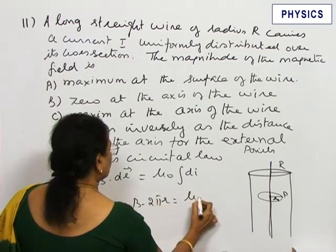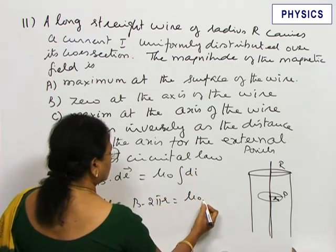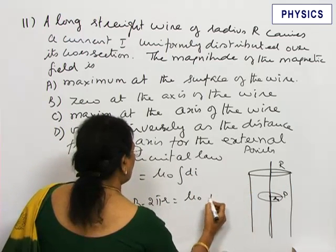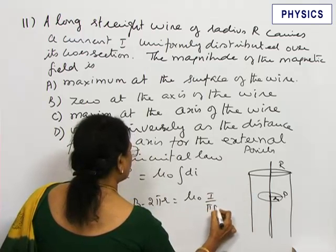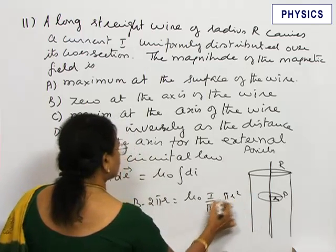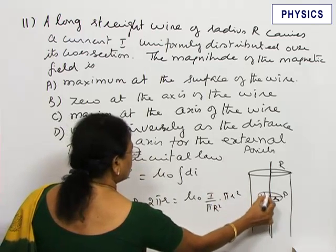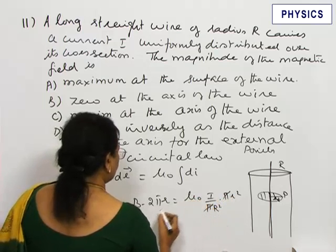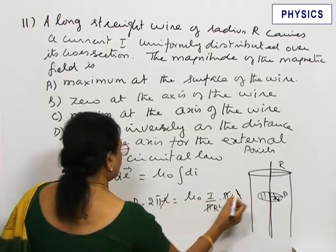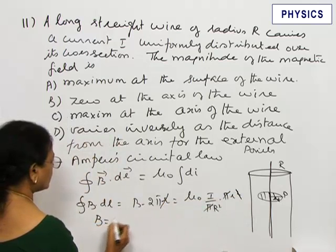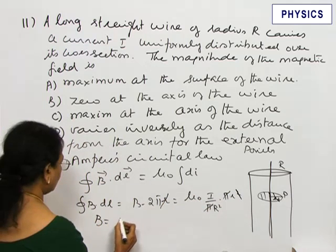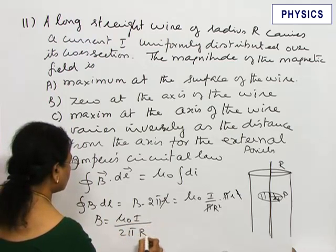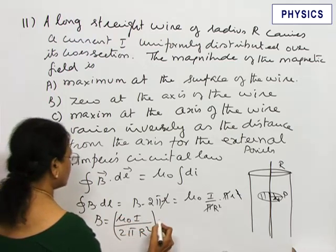That is equal to mu 0 times the total current threading. The total current is spread over this cross section. So I by pi R square multiplied by pi R square. This is the total current that is going through this cross section. Cancelling this, we can cancel one R.